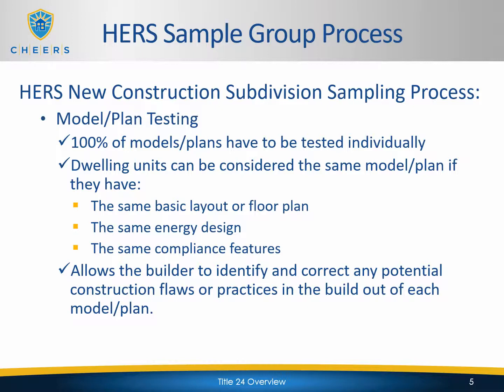In regards to sampling, there are different stages of the sampling process. When it comes to model and plan testing, 100% of the models and the plans have to be tested individually before the HERS rater can start sampling. Homes can be considered the same model or plan if they have the same basic layout floor plan, the same energy design, and the same compliance features — meaning they have to be built the same way. Each unique plan will have to be tested individually on its own before the sampling starts taking place.